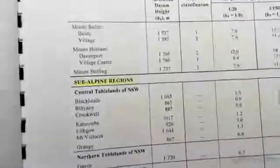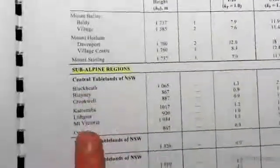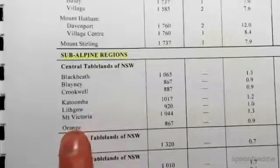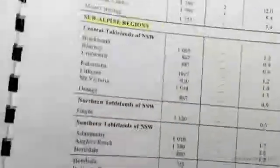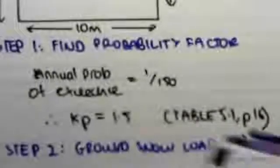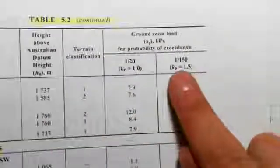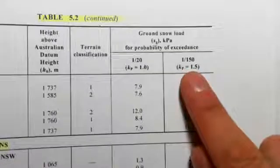So if you flip over to subalpine regions, you'll see Orange over there. There's Orange. Now our kp value is 1.5, so we're lucky that in this example kp 1.5 is a standard case.